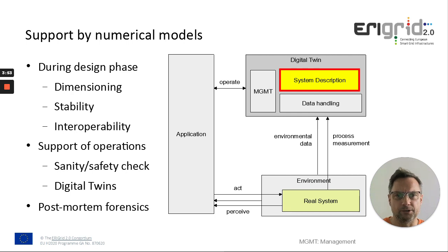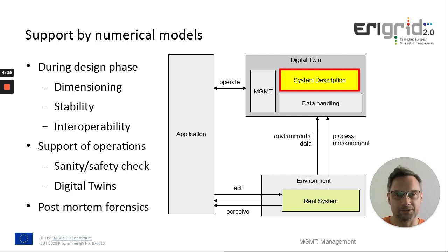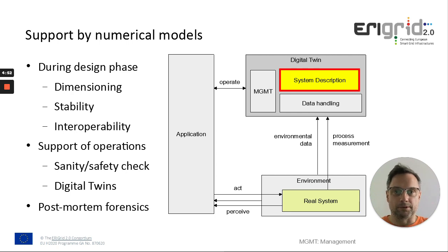During the design and planning phase, you can use such a model for dimensioning assets, for stability analysis. You can go through certain scenarios, check for interoperability — especially when it comes to controls. How do different controllers interact? This is something you almost cannot calculate analytically anymore and you need numerical methods. During operation, this model can also be useful. You can check it for plausibility — if you have a model following reality in real time, deviations might point to a problem. You can fast-forward into the future and check for robust operational decisions, and you can also use them for post-mortem analysis.